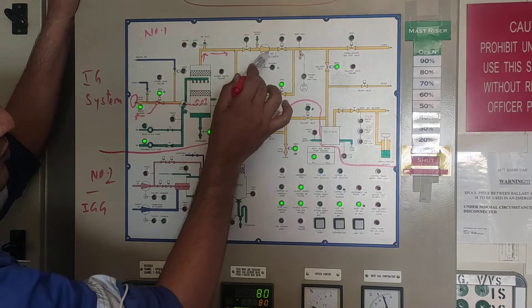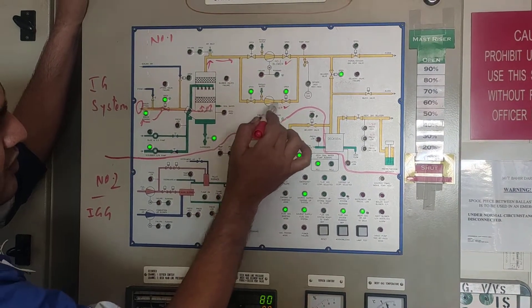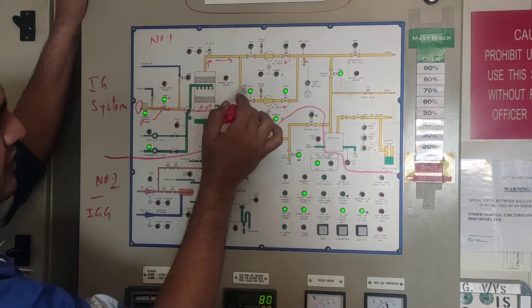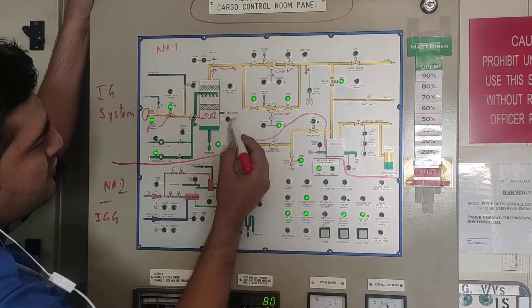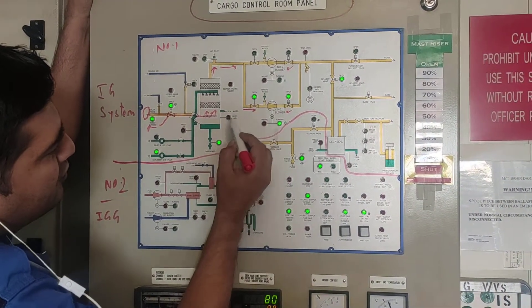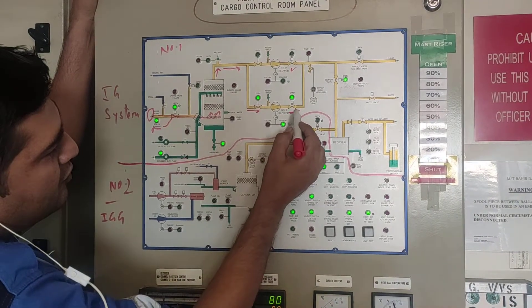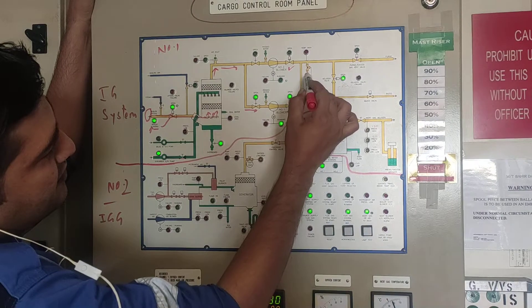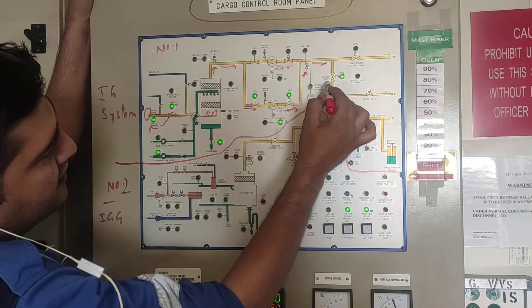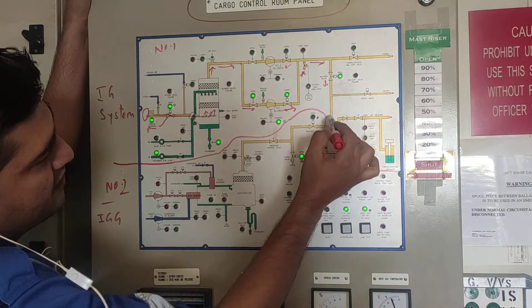Here, there are two blowers. Number two blower and number one blower. This number one blower right now is running. You can have number two blower also running. So, if you see IG is coming here for the number one blower. Blower discharge valve is open. IG is coming here and coming here. Right now the delivery valve is open, so IG is coming here.